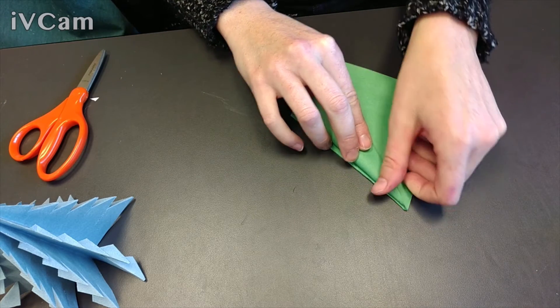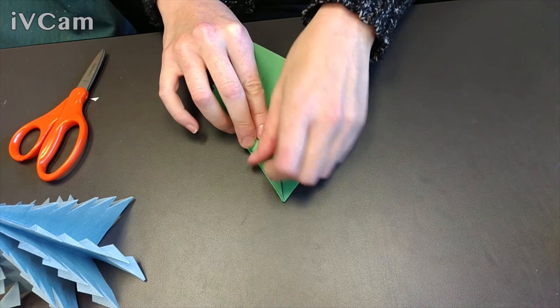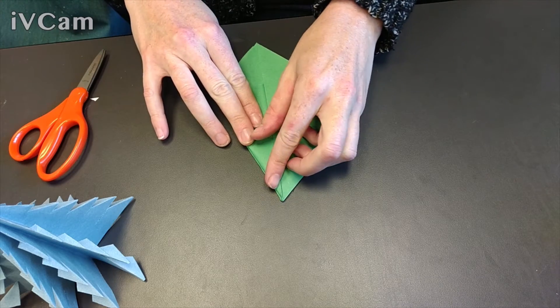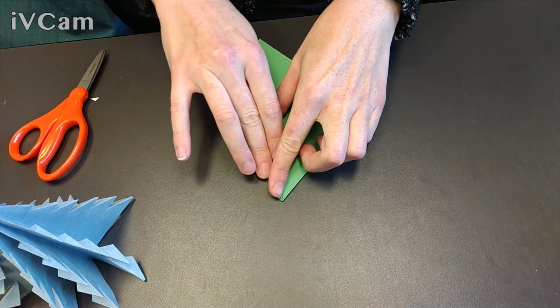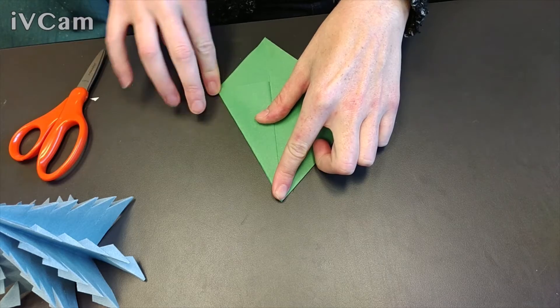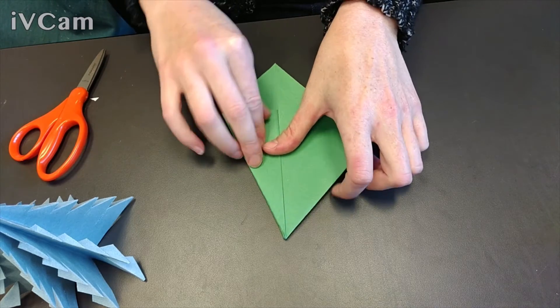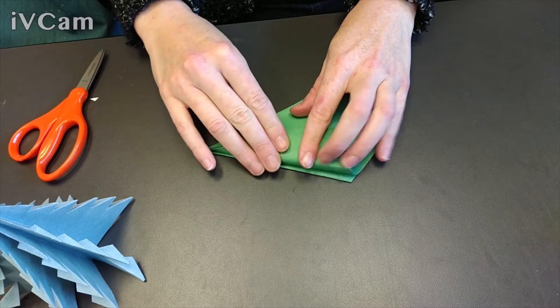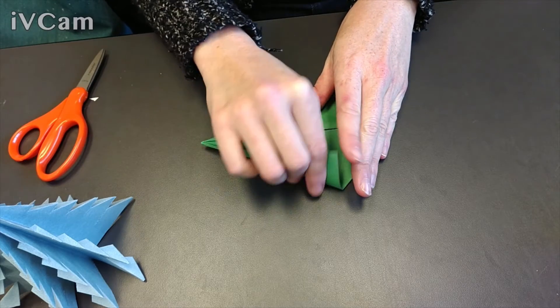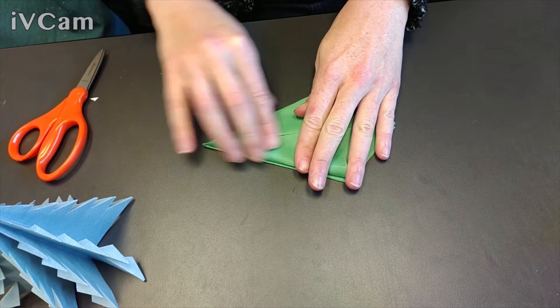So we're going to turn it over. We're going to do the same thing. You're folding your corners to the midline. You're making some little tree triangles. You're making a tree shape. Fold those in. And again, make sure you've got good creases.